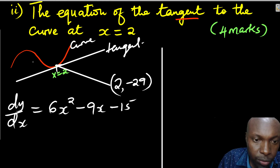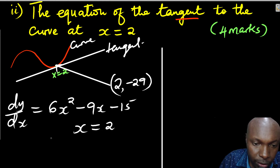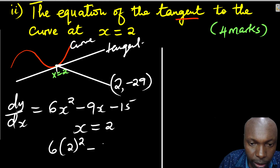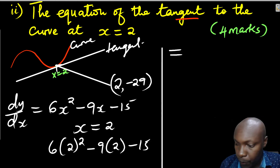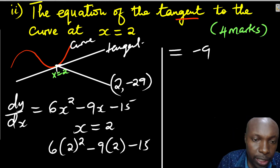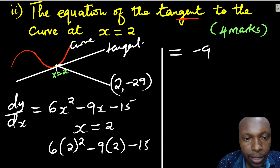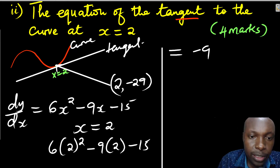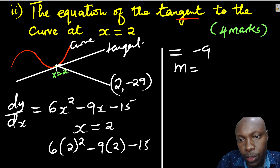To get the gradient of the curve at x equals 2, we substitute x equals 2 into the gradient function: 6 times 2 squared minus 9 times 2 minus 15. Using a calculator, this gives negative 9. So the gradient of the curve at x equals 2 is negative 9, which is also the gradient of the tangent. The curve and the tangent share the common point (2, negative 29), and the gradient is negative 9.